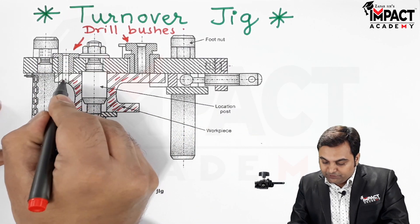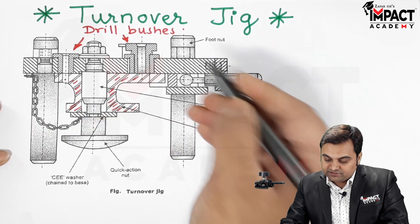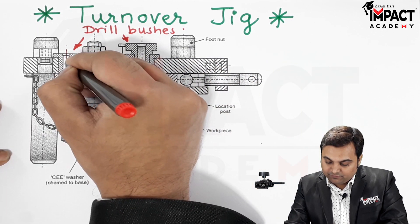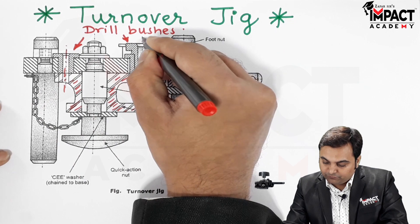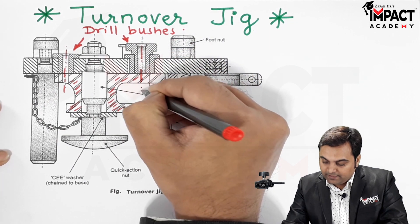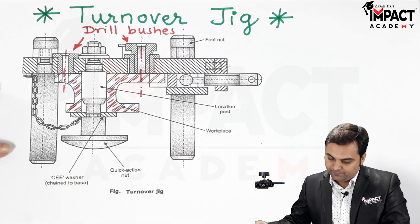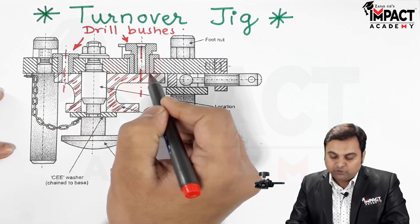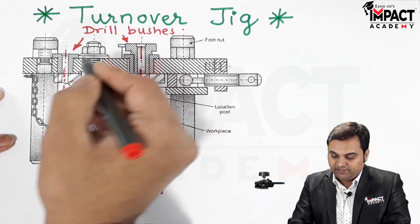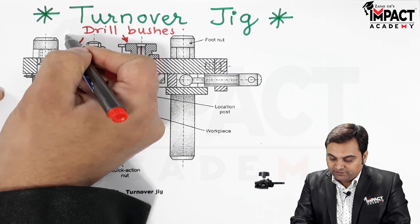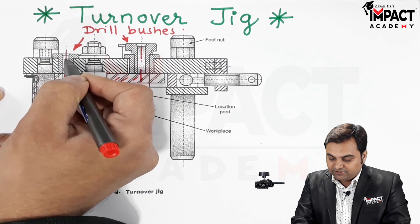We want to produce holes on these two locations, as we see here these are the center lines of the holes which we want to produce on this workpiece. The shape of the workpiece is not symmetric over here.